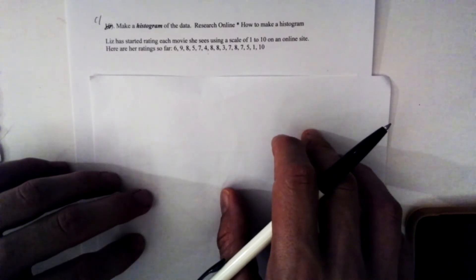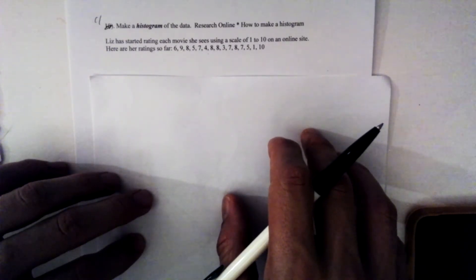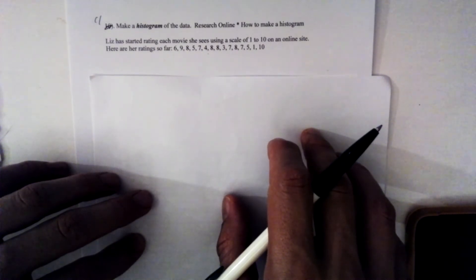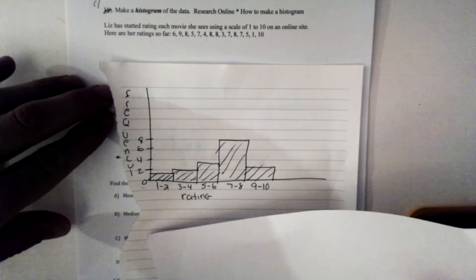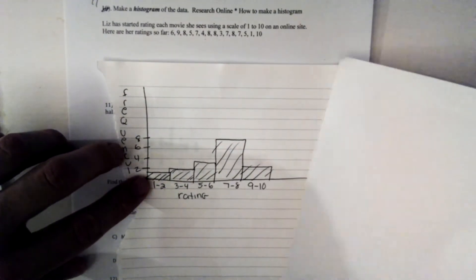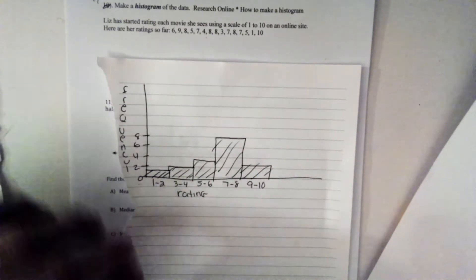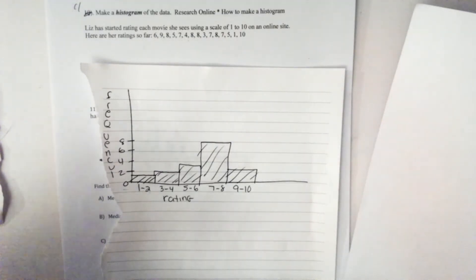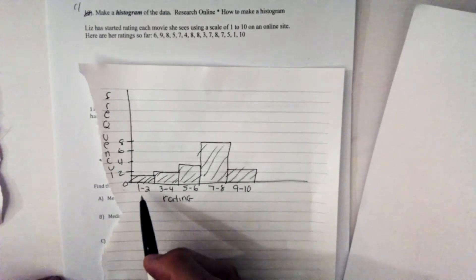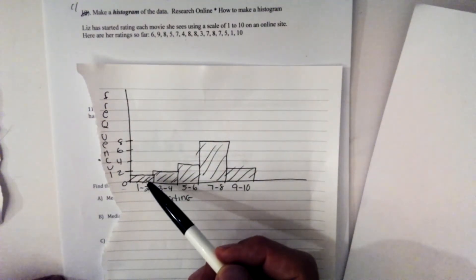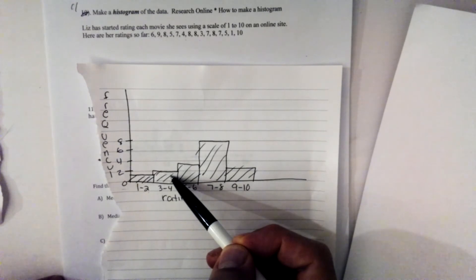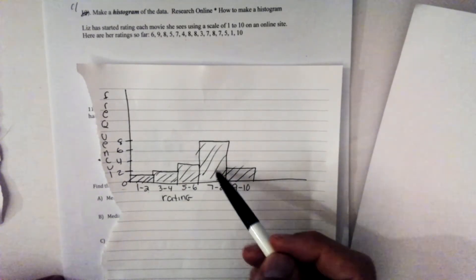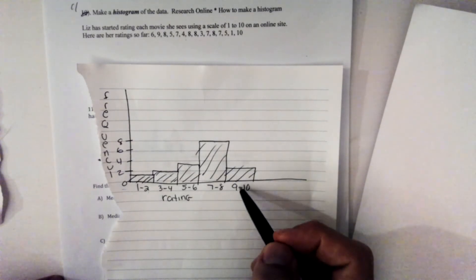Make a histogram of the data. Research online how to make a histogram. So hopefully at this point you're ready to go and you've researched. This has started rating each movie she sees using a scale of 1 to 10 on an online site. Here are her ratings so far. So I made my L chart or my quadrant 1 here with my frequency on the left side and my ratings on the bottom. Let me explain to you how this works. We're just seeing how often these appear in the data. So here I made 1 and 2 appear in the data just one time. 3 and 4 appear in the data two times. 5 and 6 appear three times. 7 and 8 appear seven times. And 9 and 10 appear just twice.